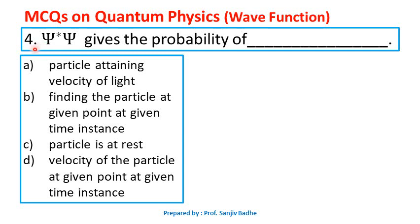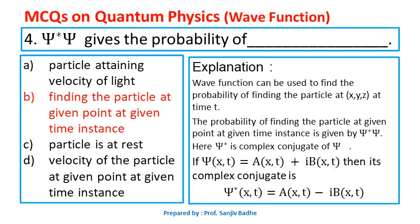Question number four. Psi star psi gives the probability of — and the options are: particle attaining velocity of light, finding the particle at a given point at given time instance, particle is at rest, velocity of the particle at given point at given time instance. We know the wave function psi mathematically describes the motion of the particle. It is not possible to locate the particle precisely at a given point x, y, z. This wave function can be used to find the probability of finding the particle at a given point x, y, z at time instance t.